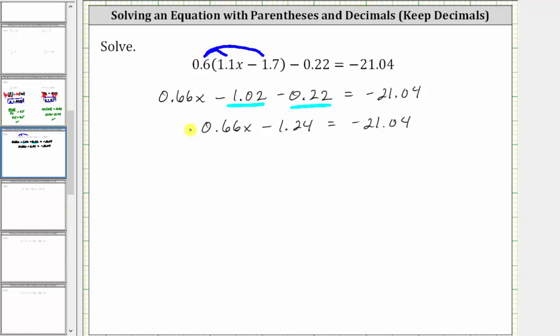The next step is to isolate the variable term by undoing minus 1.24. The opposite operation of minus 1.24 is plus 1.24, which means for the next step, we add 1.24 to both sides of the equation.